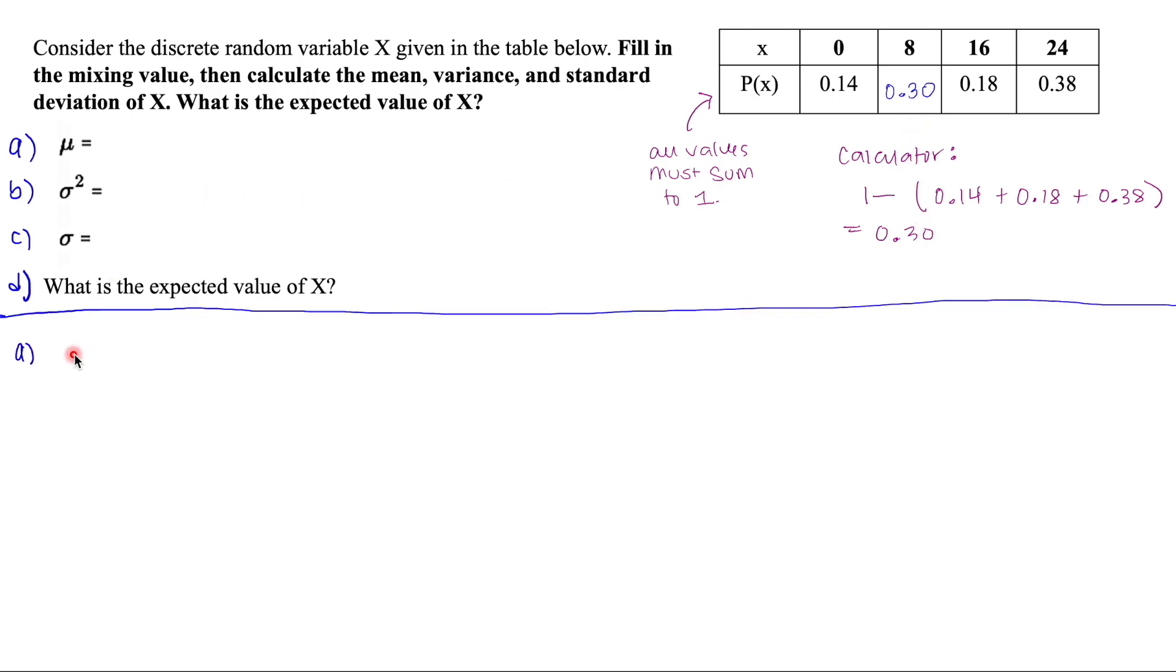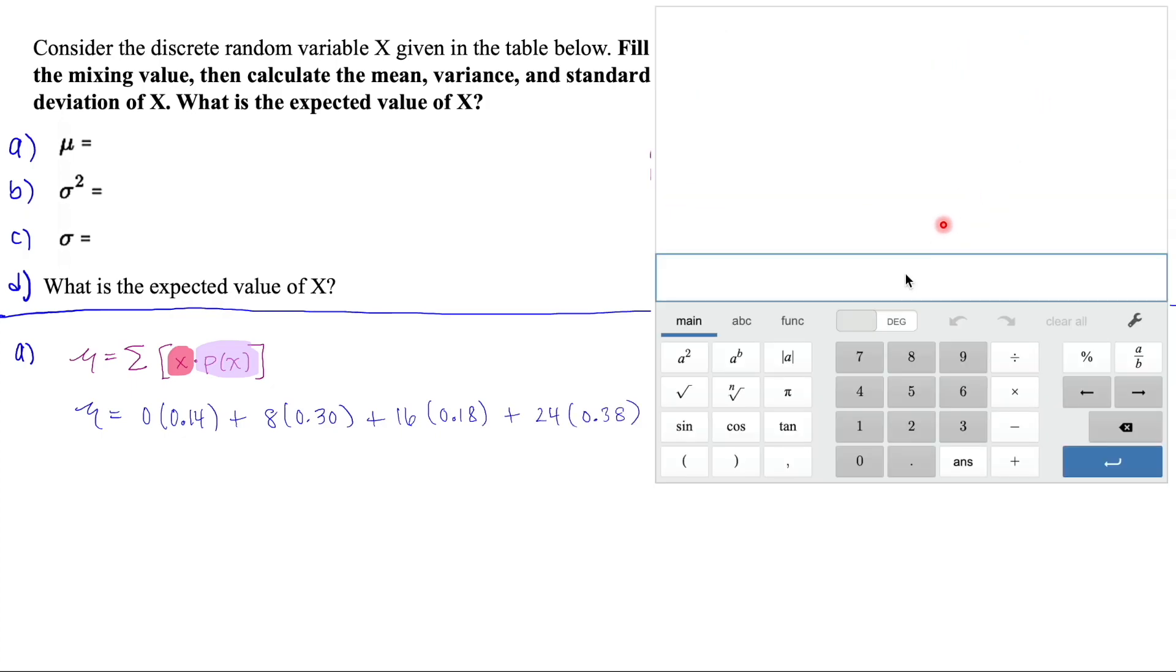The next thing that I'm going to do is I'm going to write the formula first. This is always a good practice for us as mathematicians so that the reader knows what we're doing, what calculation we're doing, and it also reinforces what the formula is for the student. So the mean is going to be equal to the summation of x times the probability value. So for each one of these x values, we're going to multiply it by its corresponding probability value and keep adding those up.